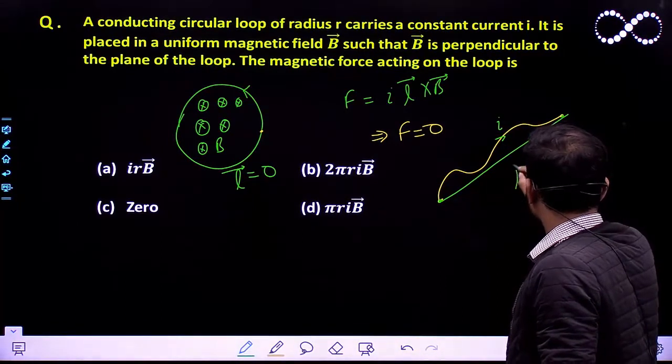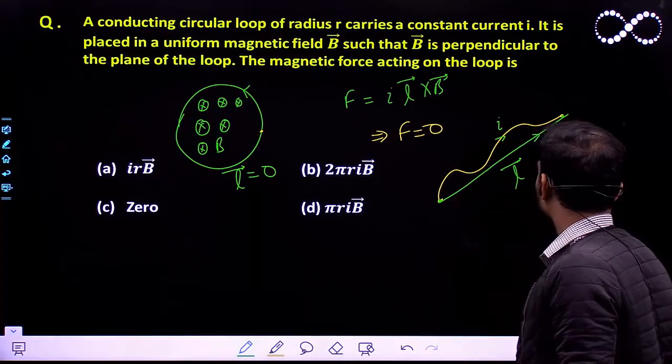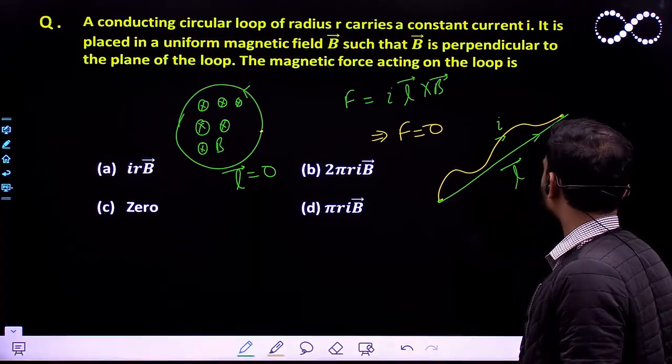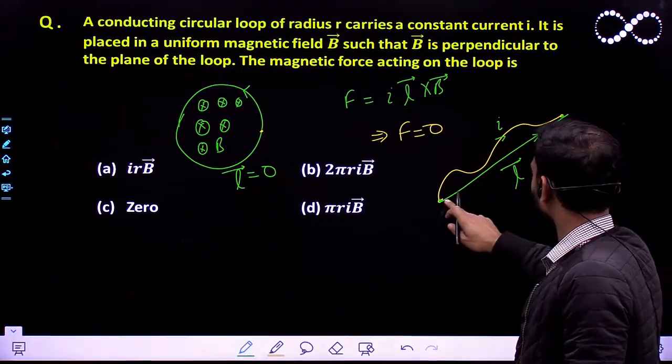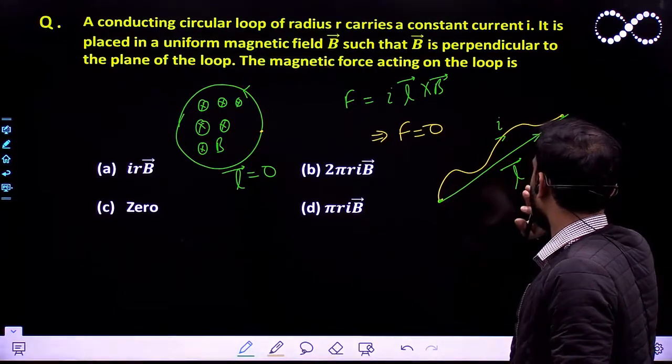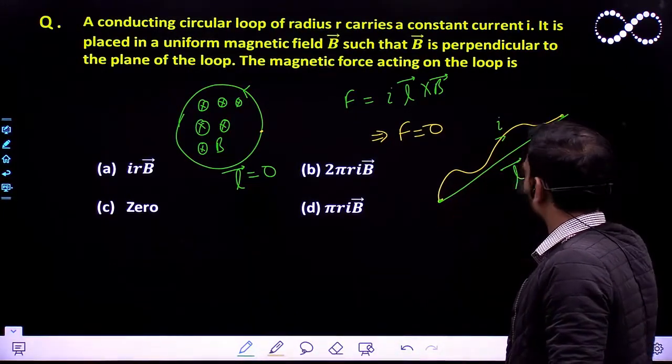So the L vector will become like this. So how I find the L vector: I just join the starting point and end point, and in the direction of current I take the L vector.